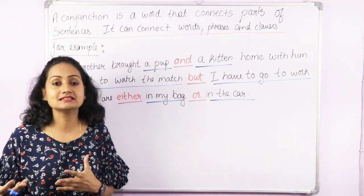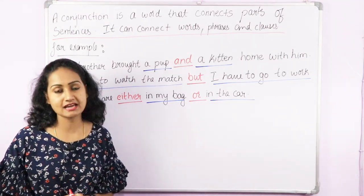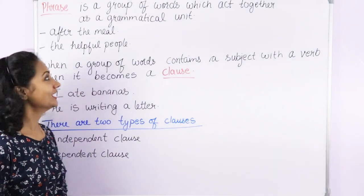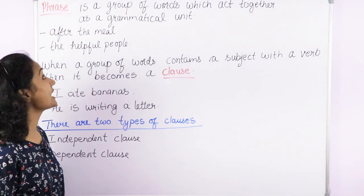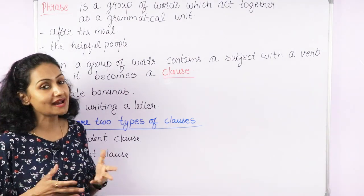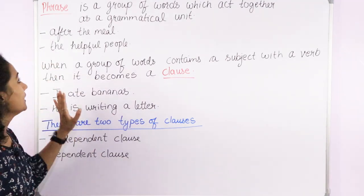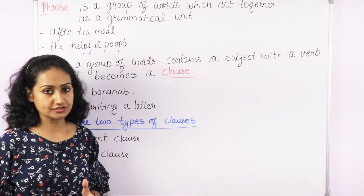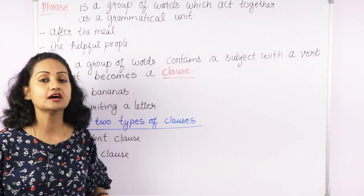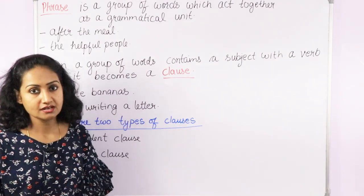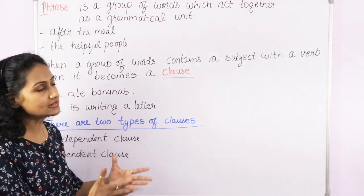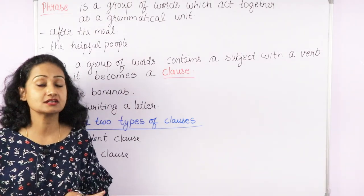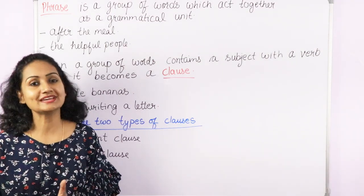Now to understand this in detail, we need to understand what a phrase and a clause are. A phrase is a group of words which act together as a grammatical unit. For example: 'after the meal,' 'the helpful people.' These are groups of words, and none of these examples contain a verb or a subject — it is merely a group of words.